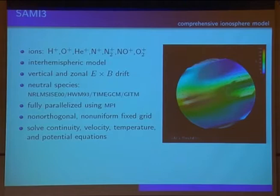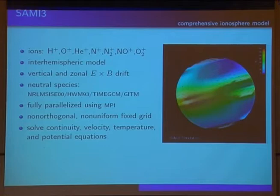And so we built the model, first SAMe-2, which was a 2D code, and then we went to SAMe-3, a 3D code. We have seven ion species, four atomic and three molecular. It's an interhemispheric model. We have vertical and zonal equatorial drifts. For the neutral species, primarily we use MSIS and horizontal wind model, but we're working with Jeff Crowley on a small NASA grant to couple to time GCM and informally working with Aaron Ridley to couple to GITM.